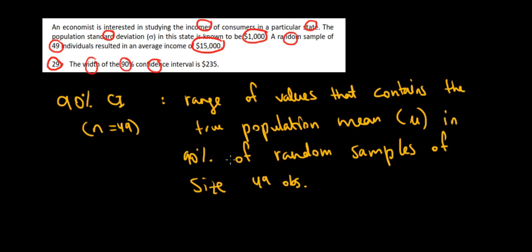In other words, if we take 100 random samples that contain 49 observations from this particular state, in 90 of them we are going to have the true population mean included in the confidence interval. So the confidence interval contains that population mean in 90% of these random samples.